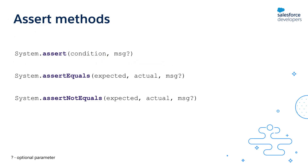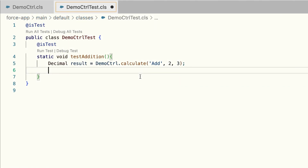To validate if the result is accurate, the Apex testing framework provides assert methods. We have three: Assert, AssertEquals, and AssertNotEquals. Assert checks if an expression is true or not. AssertEquals checks if two values passed to it are equal. AssertNotEquals checks if the two values are different.